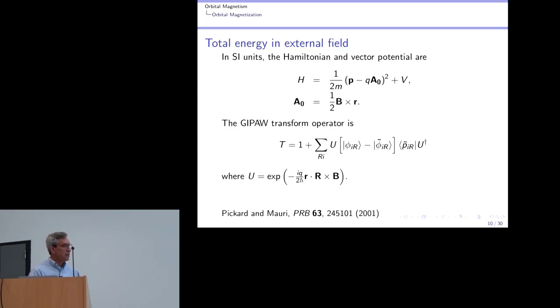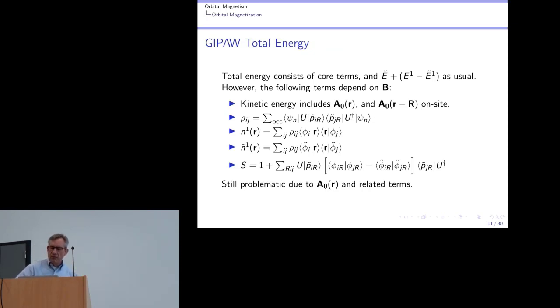And that leads to what the Pickard and Mauri papers, we typically refer to as the GIPAW energy. And so this is just the normal PAW energy in which the projectors have been properly transported in a magnetic field to pick up their phase factors. So that affects lots of things. The rho_ij and the densities and the overlap operator. And the kinetic energy operator. Now the kinetic energy operator and buried inside rho_ij is still a dependence on little r directly.